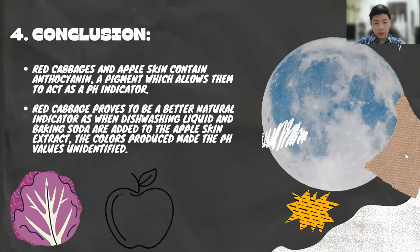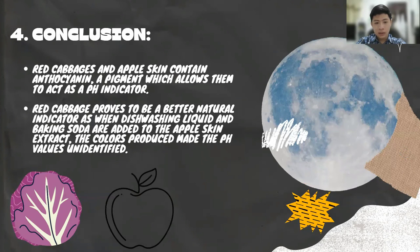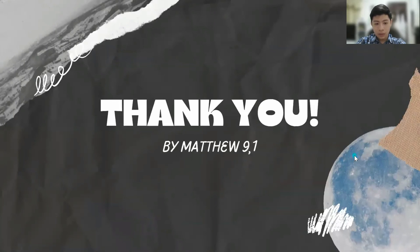Now for the very last part, let me conclude my video. First, red cabbages and apple skin contain anthocyanin, a pigment which allows them to act as pH indicators. Second, red cabbage proves to be a better natural indicator, as when dishwashing liquid and baking soda are added to the apple skin extract, the colors produced made the pH values unidentified. That's all for my video — thank you for listening. I do hope this video proves to be educational for everyone watching, and have a great day.